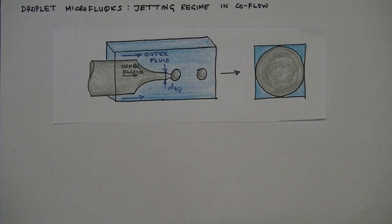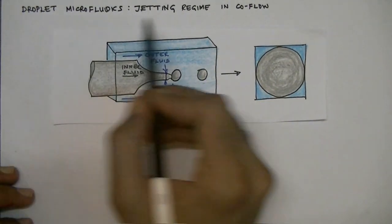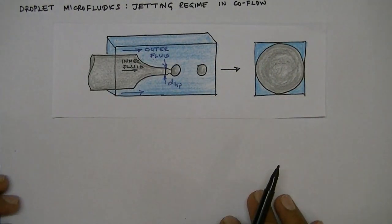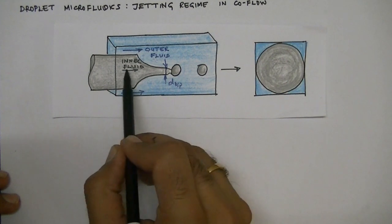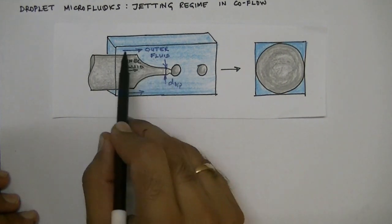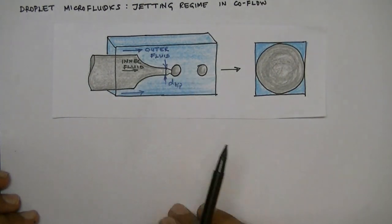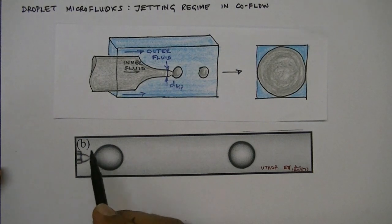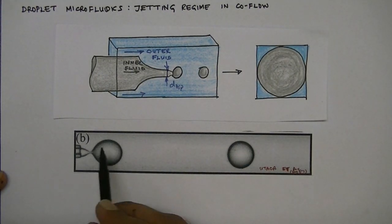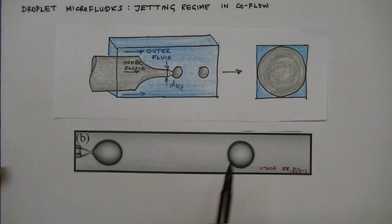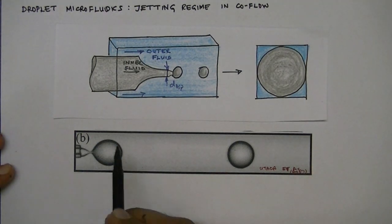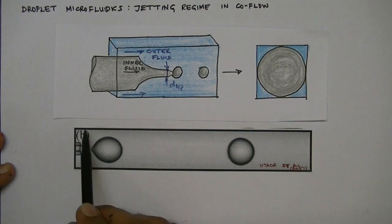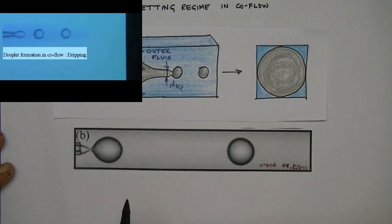In this lecture we will continue our discussion on droplet microfluidics, and in particular how to generate droplets using a co-flow microfluidic device. We have seen in the previous lecture that if we have this co-flow device where we have an inner fluid being injected along with an outer fluid, and these two fluids are immiscible, then at low flow rates of both inner and outer fluids you have this dripping regime of droplet formation. This dripping is due to the competition between surface tension and the viscous drag imparted by the outer fluid.